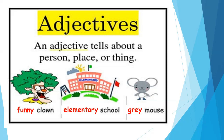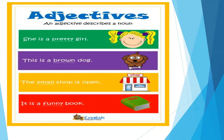An adjective describes a noun. She is a pretty girl — girl is a noun and pretty is an adjective. This is a brown dog — dog is a noun and brown is an adjective. The small shop is open — shop is a noun and small is an adjective. It is a funny book — book is a noun and funny is an adjective.